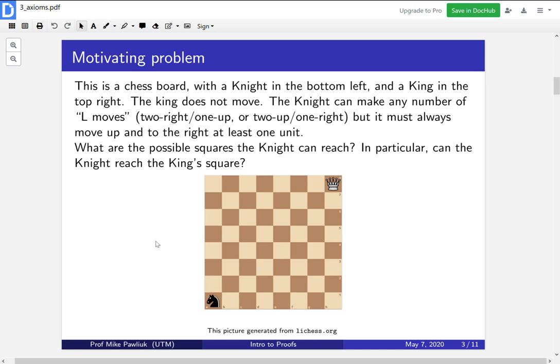Our questions are: what are the possible squares the knight can reach? And in particular, can the knight reach the king's square just by using those types of moves?